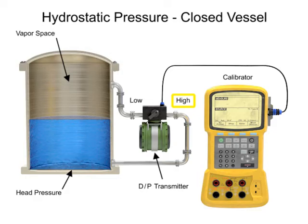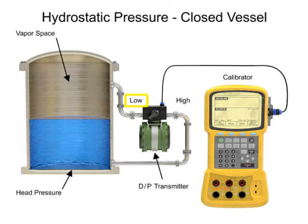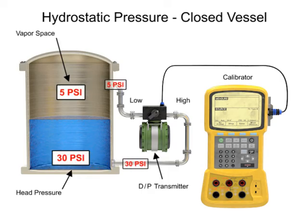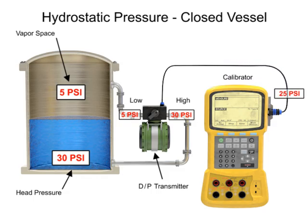This device has a high-pressure side input and a low-pressure side input. The high-pressure input is connected to the bottom of the tank to measure hydrostatic pressure. The low-pressure input of the differential pressure transducer is connected to the vapor space pressure. The transducer subtracts the vapor pressure from the high pressure, resulting in a value that represents the hydrostatic head proportional to the liquid level.